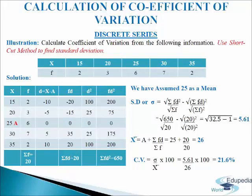Now we calculate CV, coefficient of variation. First we find mean: a plus sigma Fd divided by sigma F equals 25 plus 20 divided by 20, giving 26 as mean. Now coefficient of variation equals standard deviation divided by mean multiplied by 100. We put in the values and get 21.6% as coefficient of variation. This is how we calculate coefficient of variation in discrete series using the shortcut method.